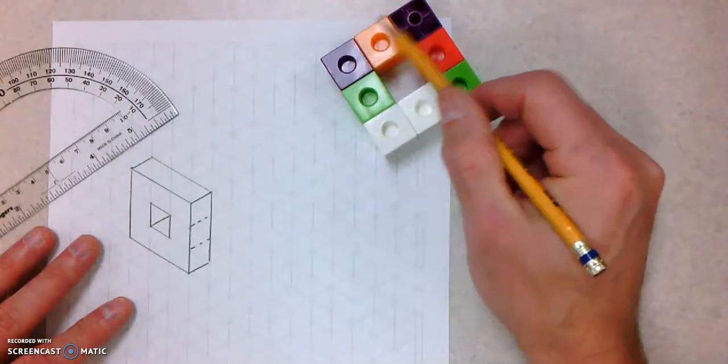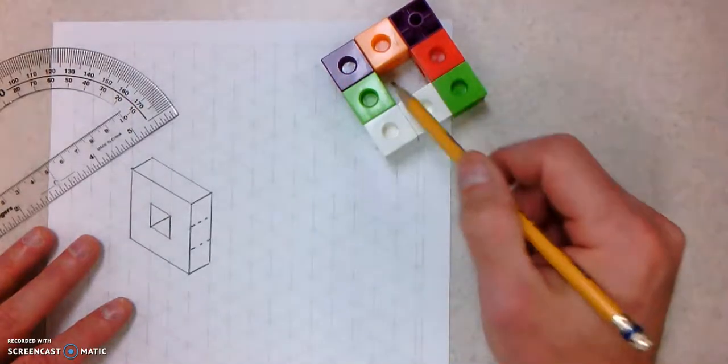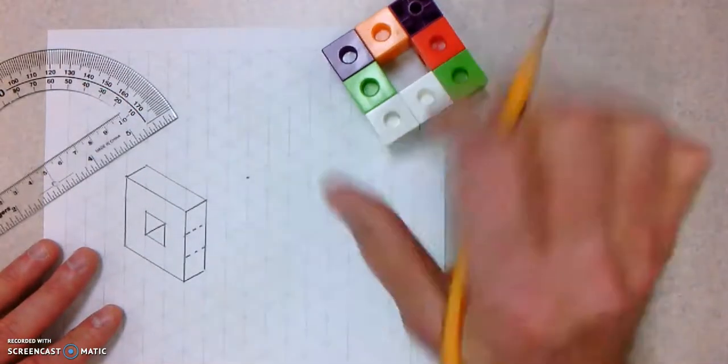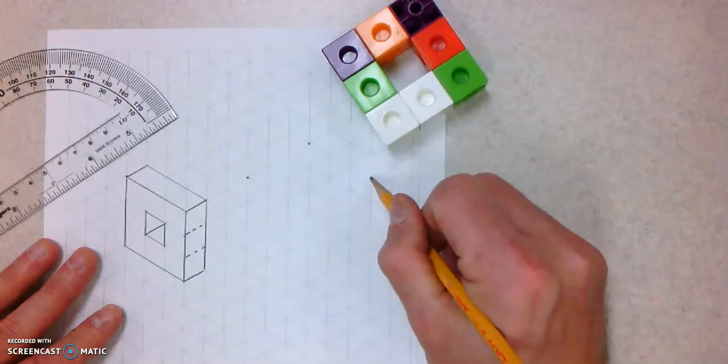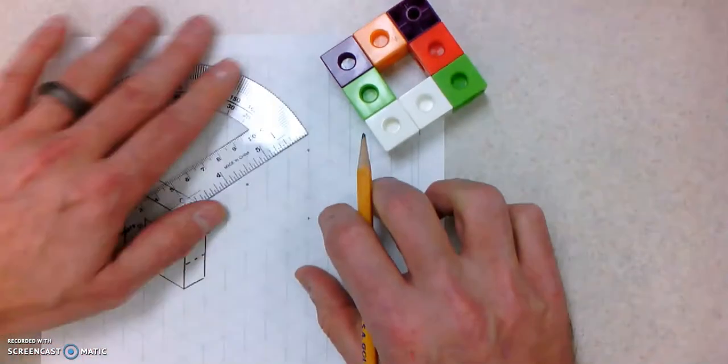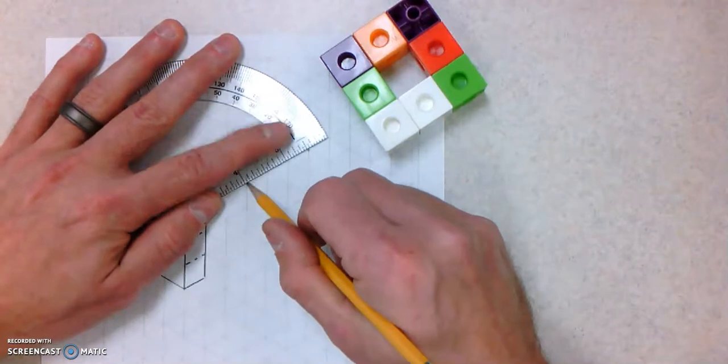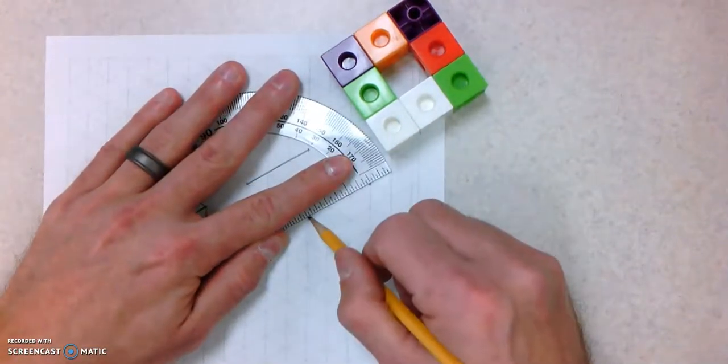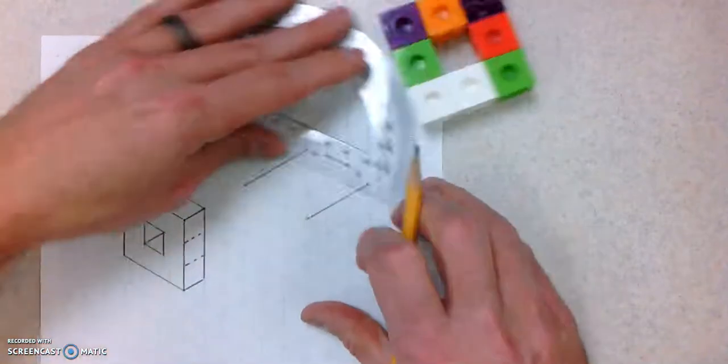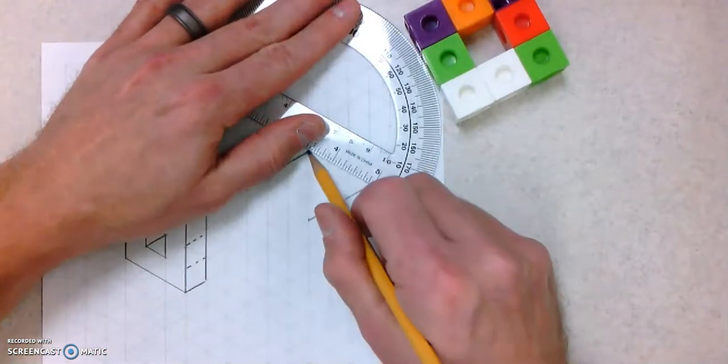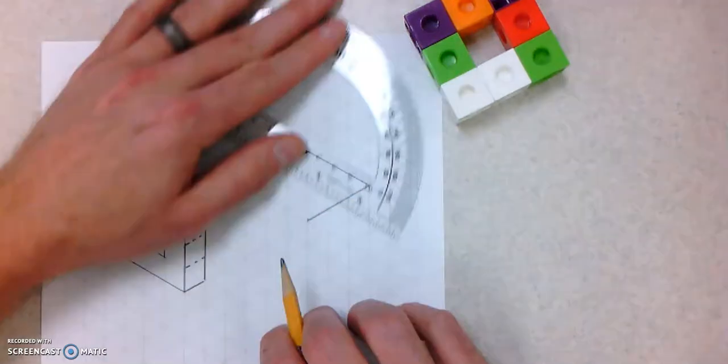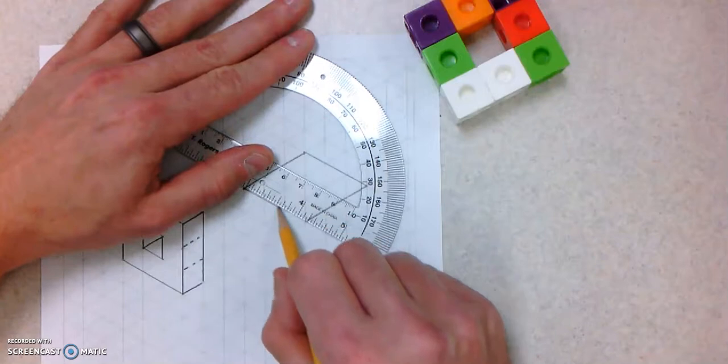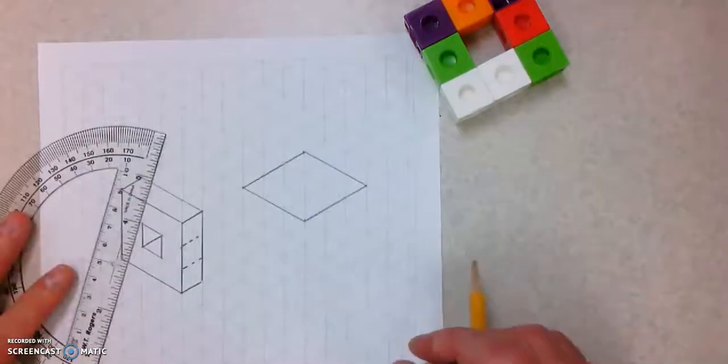For my top, I've got basically a square that is three by three with a hole in the middle. I'm going to lay out my points for that. So I've got that portion done.